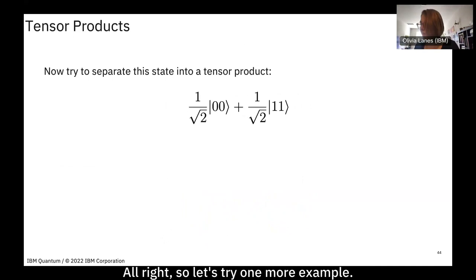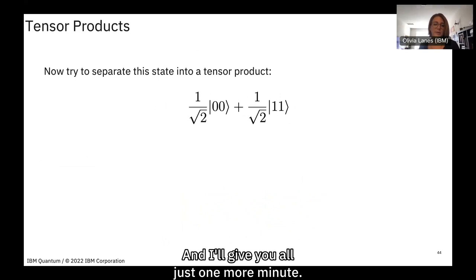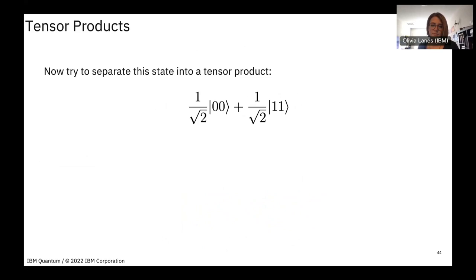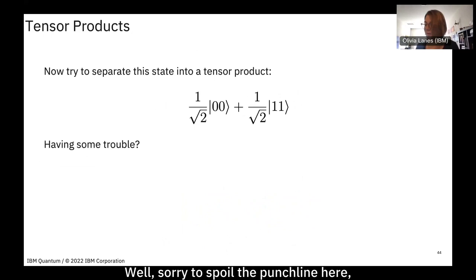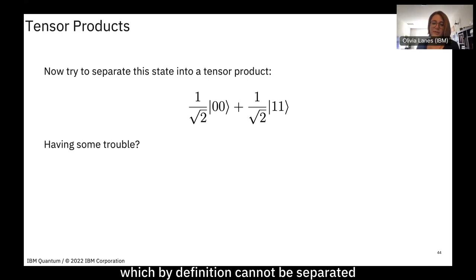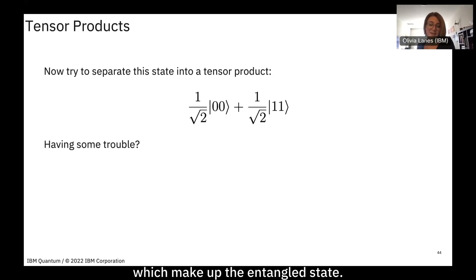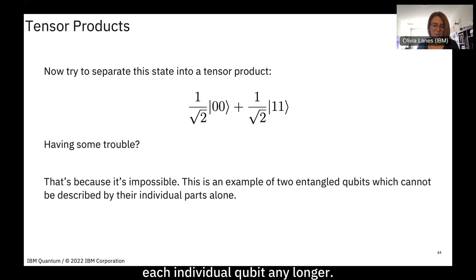Now let's try to find the separable states of another two-qubit state. Actually, this is impossible — you're struggling because this state cannot be separated into individual components. This is a description of an entangled qubit state, which by definition cannot be separated. Entangled states can only be described by the sum over all the different states that make them up; you cannot separate and measure each individual qubit independently.